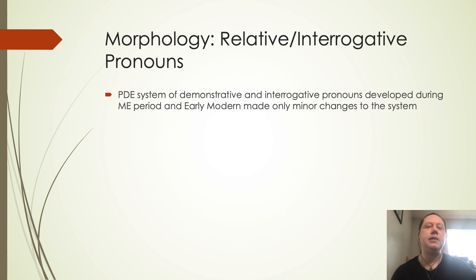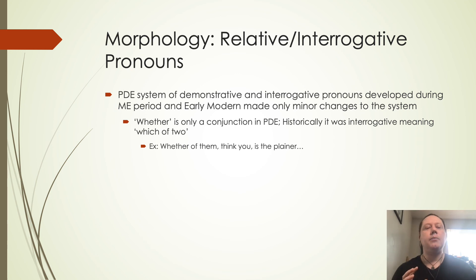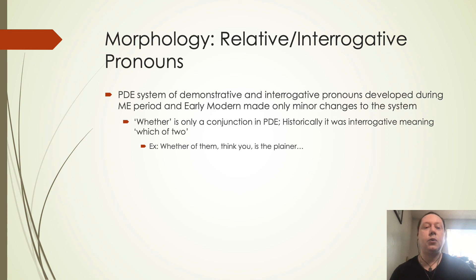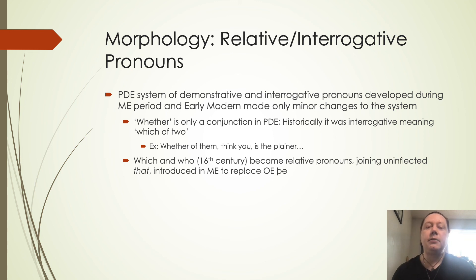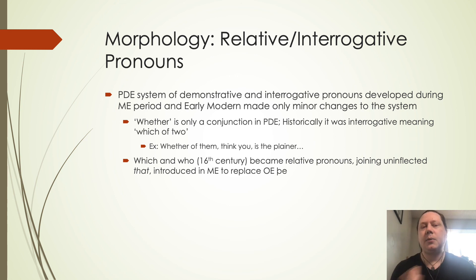With other kinds of pronouns, we see the present-day system of demonstrative and interrogative pronouns starting to develop. There's not a lot of changes made to this system. In present-day English 'whether' is only used as a conjunction, as in 'whether or not,' but historically it was a question meaning 'which of two' — 'whether of them is the fairer.' 'Which' and 'who' start becoming relative pronouns and begin joining uninflected 'that,' which was introduced in Middle English to replace the old forms, and this continues into Early Modern English becoming nearly identical to what we have today.